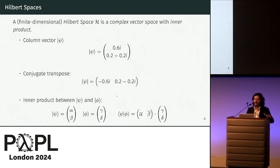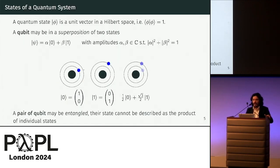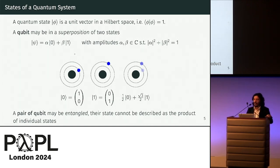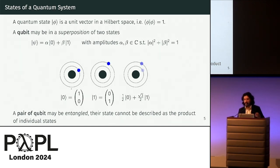Regarding the quantum part, we work with finite dimensional linear spaces. We adopt the Dirac notation: the bra is the conjugate transpose of a ket, which is a column vector, and we have the dot product and standard vector spaces. Two important properties of quantum states: a quantum state may be in a superposition, meaning it is a linear combination of a given basis, and if we have a larger system it can be entangled, meaning it cannot be decomposed as a tensor product of its component subsystems.